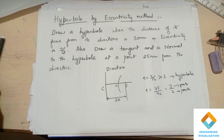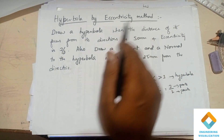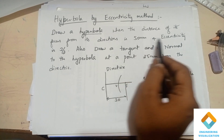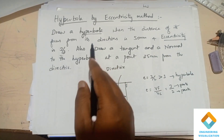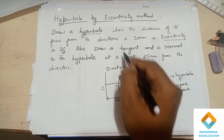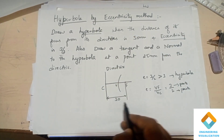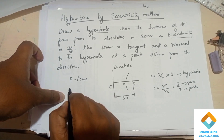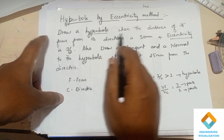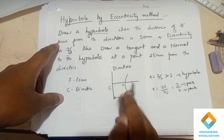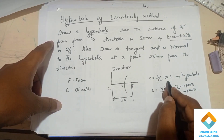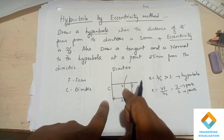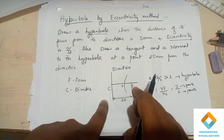Welcome to Engineering Visualization channel. Today we are going to construct a hyperbola by the eccentricity method. The distance of its focus from its directrix is 50 mm and eccentricity is 3/2. Eccentricity of 3/2 is greater than 1, which means it is a hyperbola.